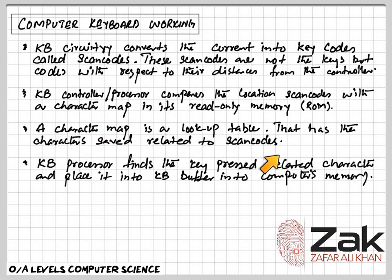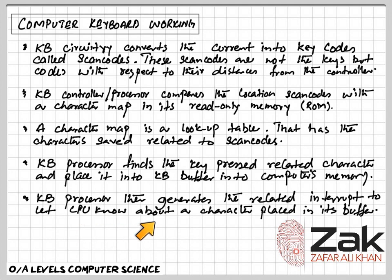The keyboard processor finds the key pressed by looking up its character from the character map and places it into the keyboard buffer in the computer's memory. Every computer's RAM has a buffer related to the keyboard, and the keyboard uses that buffer to store the character pressed. Afterwards, the keyboard processor generates the related interrupt — the interrupt number related to the key press — so that the microprocessor knows a key has been placed in the keyboard buffer.